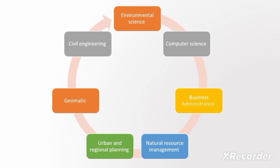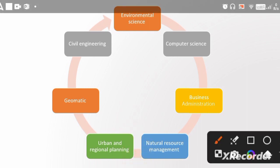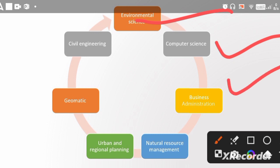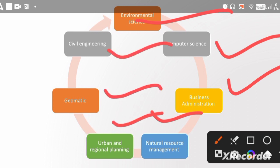We will see a flowchart showing which subject disciplines use GIS. You can see environmental science, computer science, business administration, natural resource management, urban and regional planning, geomatics, civil engineering — there are many applications of GIS. In academics, these are the main major disciplines where GIS is applied.